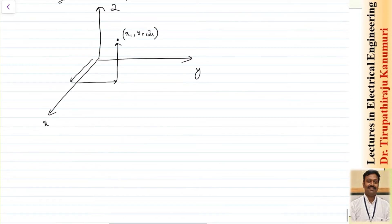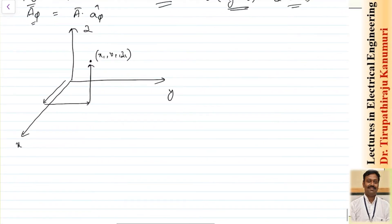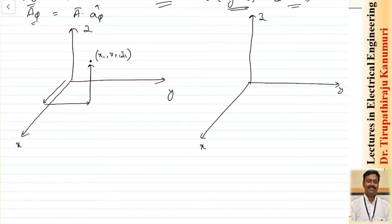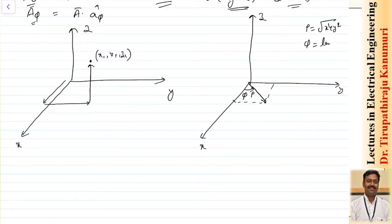Now let us look at the cylindrical coordinate system, and then the relationship between the two. In the cylindrical coordinate system, using the x and y coordinates, we form a circle. The radius in the xy plane is called rho, and rho equals the square root of x² + y². The angle phi is with respect to the x axis, obtained by tan⁻¹(y/x).